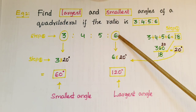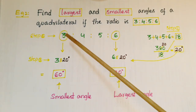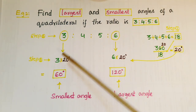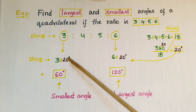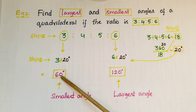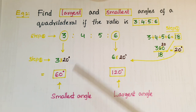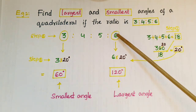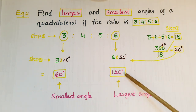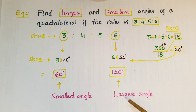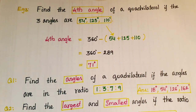Multiply 3 with 20 degrees: 3×20 = 60 degrees — this is the smallest angle. Multiply 6 with 20 degrees: 6×20 = 120 degrees — this is the largest angle.